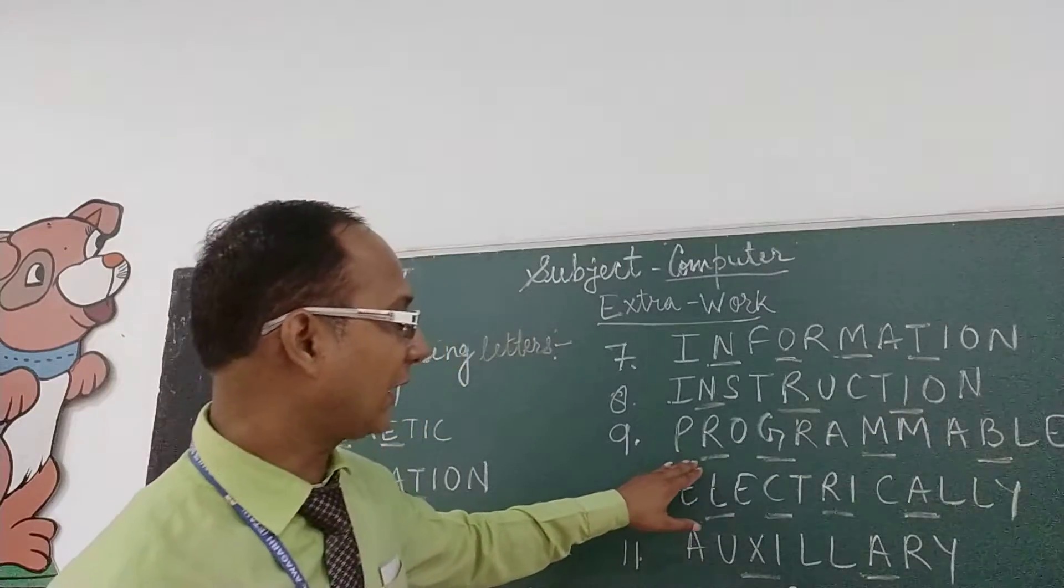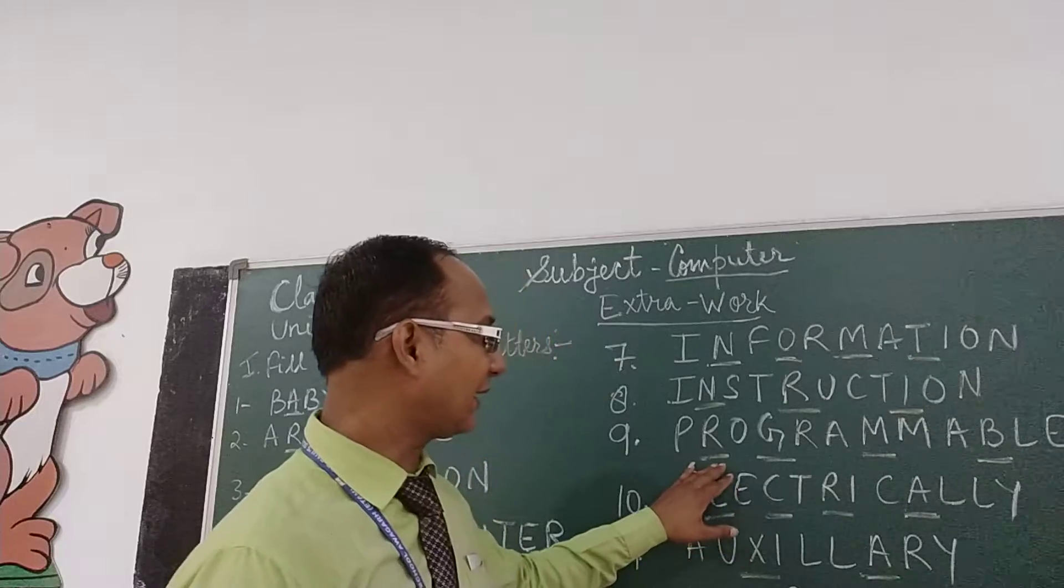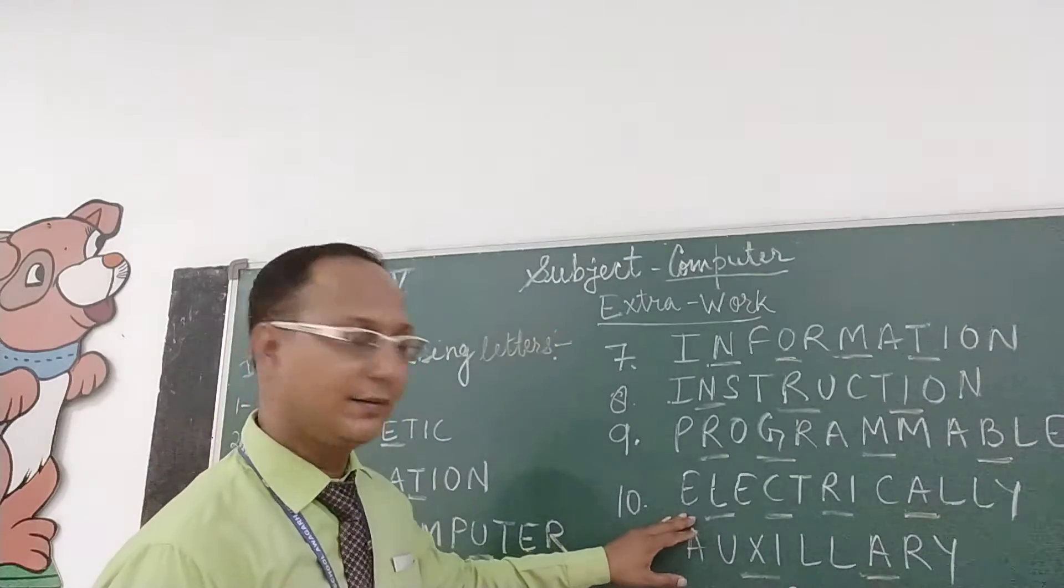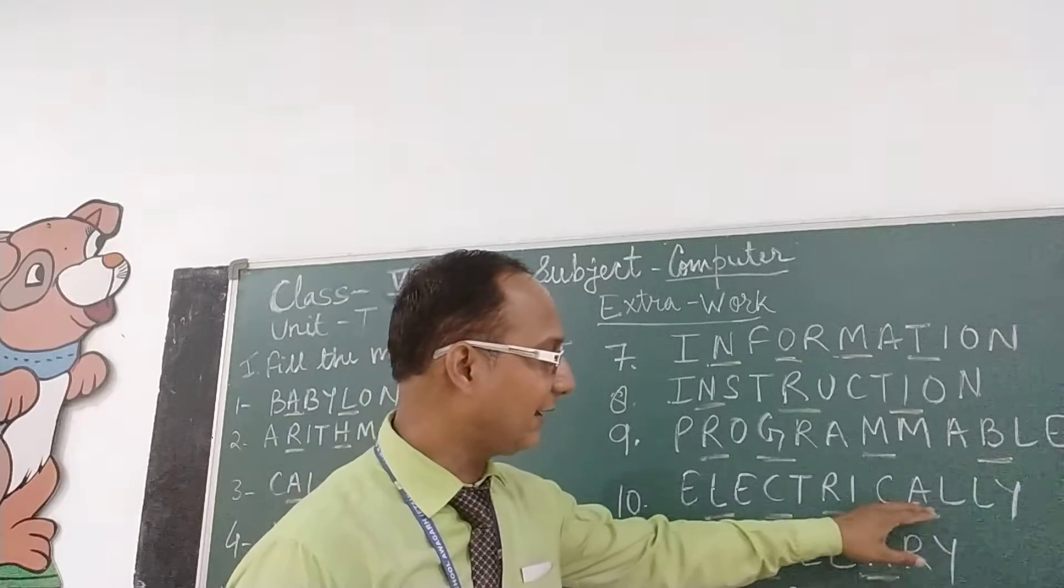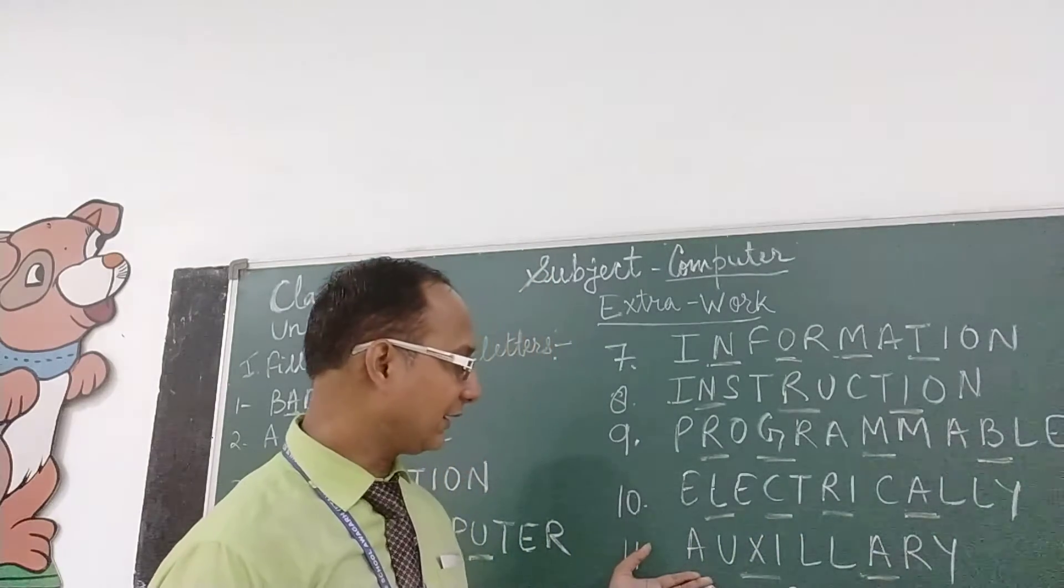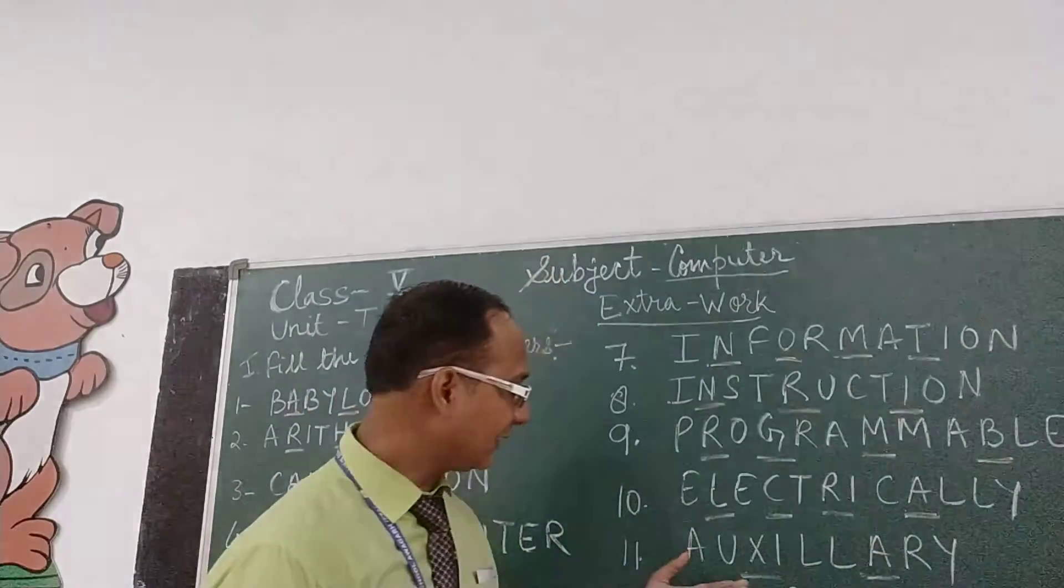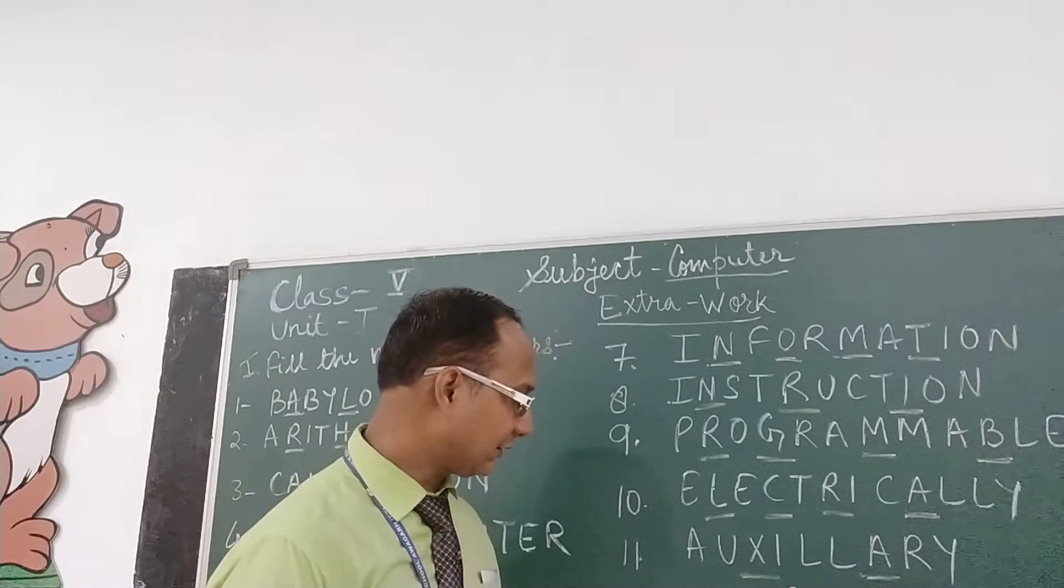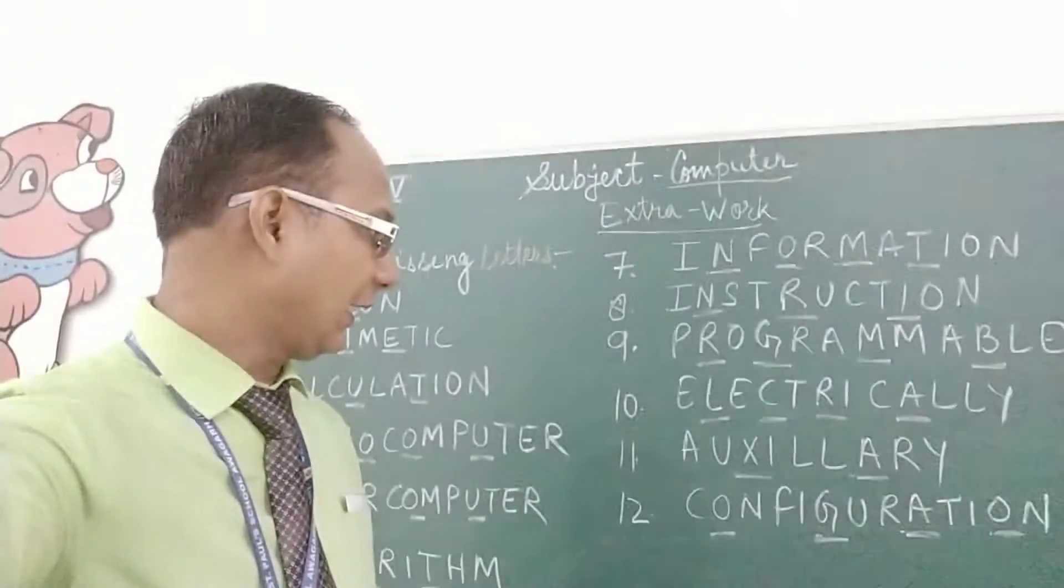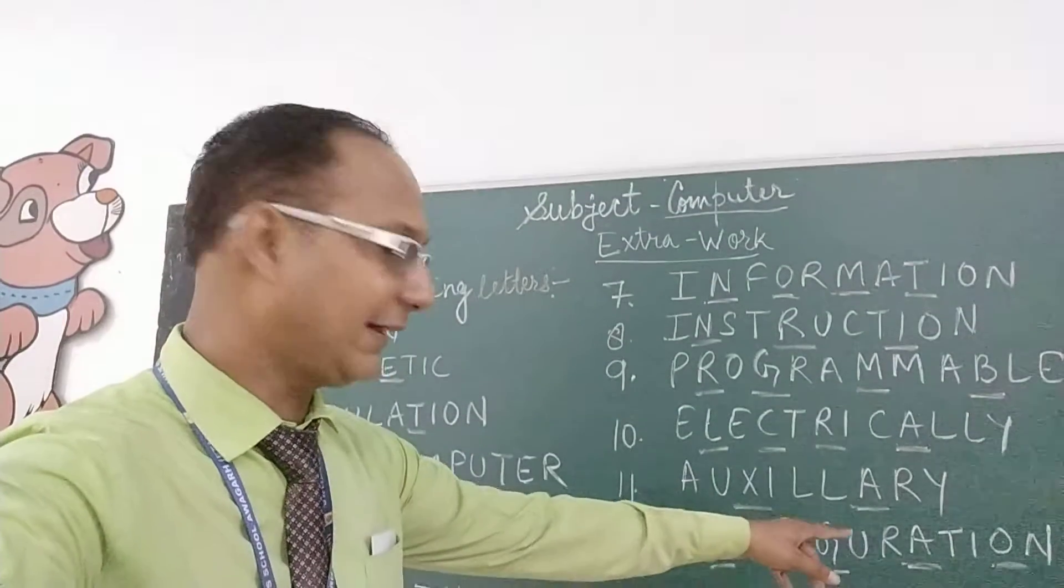Next word is programmable, P-R-O-G-R-A-M-M-A-B-L-E, underline the letters A, G-M-M-B. Next is electrically, E-L-E-C-T-R-I-C-A-L-L-Y, underline the letter L, C-R-A. Next word is auxiliary A-U-X-I-L-I-A-R-Y, underline the letter X and L. Next word is configuration, C-O-N-F-I-G-U-R-A-T-I-O-N, underline the letter O-G-A-N-O.